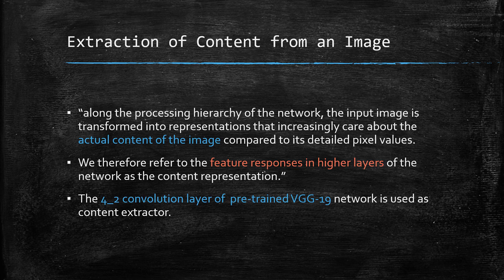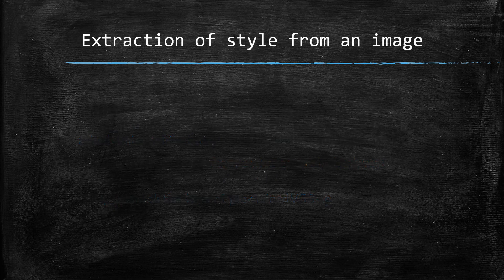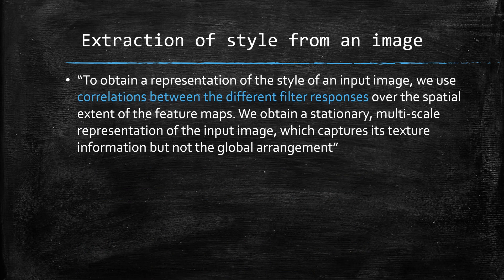For style extraction, the research paper states: to obtain a representation of the style of an input image, we use correlations between different filter responses over the spatial extent of the feature maps. This gives a stationary multi-scale representation that captures texture information but not the global arrangement. Essentially, we take feature maps and compute correlations — dot products between feature maps within the same layers.